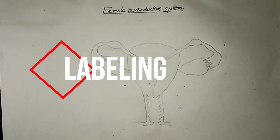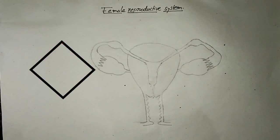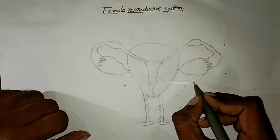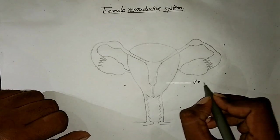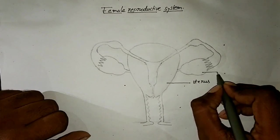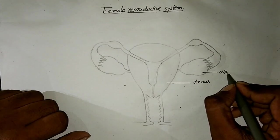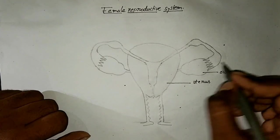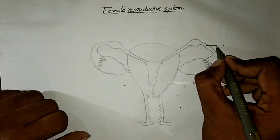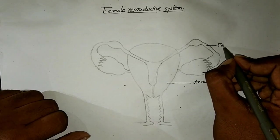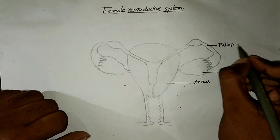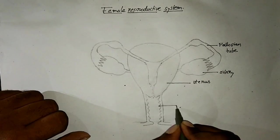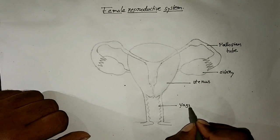Now friends, let us label the diagram of the female reproductive system. This is called the uterus, which is also called the womb. And this is the ovary. There are a pair of ovaries on either side. And this is going to be the fallopian tube, through which the egg cell enters into the tube. And this is going to be the vagina or birth canal.